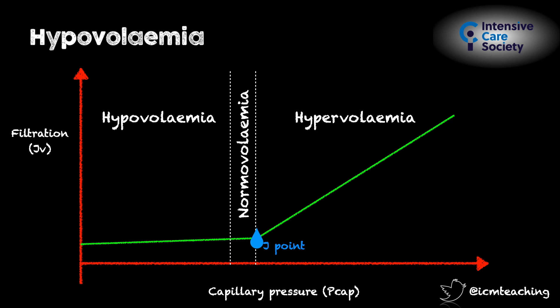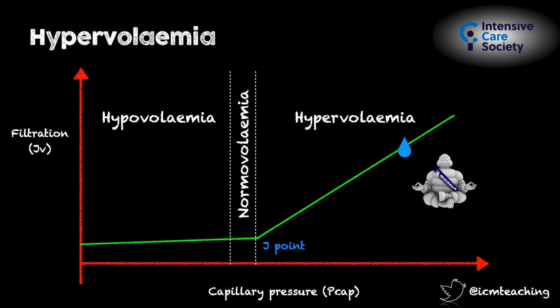After all, without IV fluid, we can replenish plasma volume simply by drinking water. Now what about if we infuse too much fluid, causing hypervolemia? Here the J-point can be exceeded enough to overwhelm lymphatic return, and oedema will result.